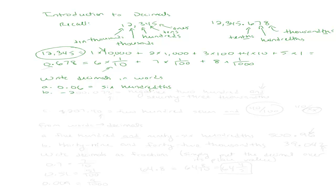Let's try another example: negative two hundred point zero seven three. The whole number part we write as negative two hundred. The decimal point we represent with the word 'and.' Then the part after the decimal, we write depending on the last place value. The last digit three is in the thousandths place, so we write seventy-three thousandths. Full answer: negative two hundred and seventy-three thousandths.